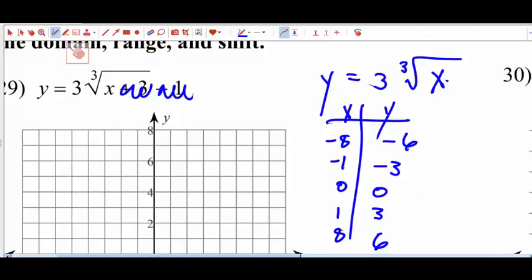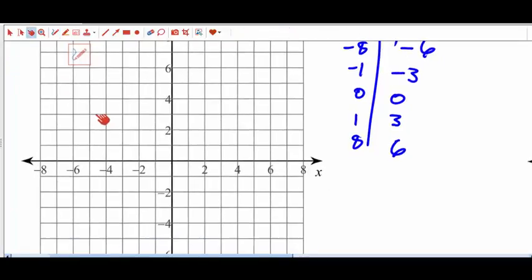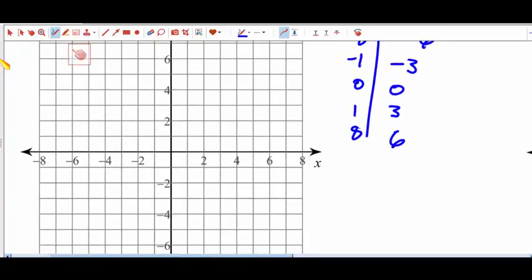I'm going to graph those points. So negative 8, negative 6 would be right there. Negative 1, negative 3 would be there. 1, 3 is there. And 8, 6 is there. So I'm going to connect the dots, and I get something that looks like kind of a stretched out S.